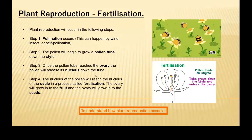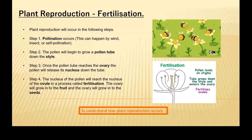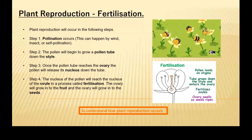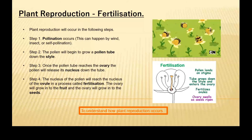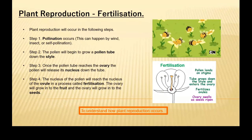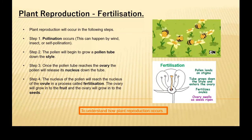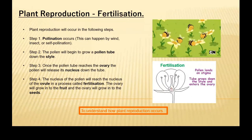The pollen is the male sex cell for the plant and that will have a nucleus. The ovule is the female sex cell. Once the pollen has released its nucleus, the process of fertilization will occur within the ovule. Now, the ovary will grow into the fruit, and the ovules will grow into the seeds.